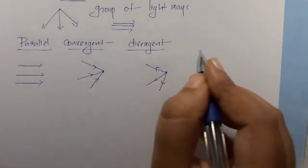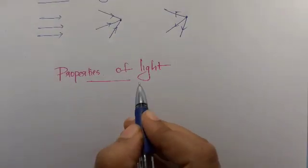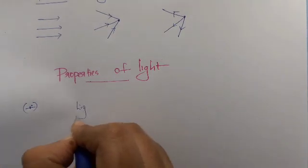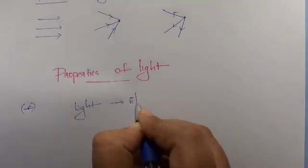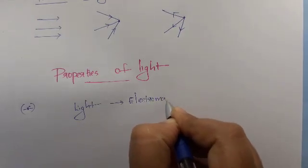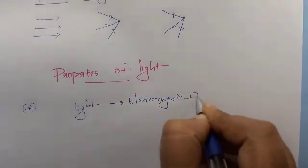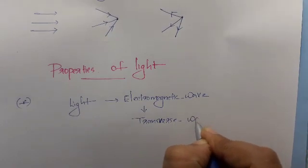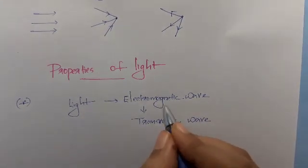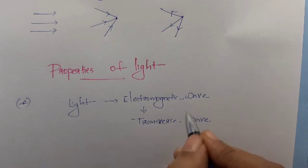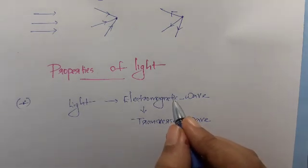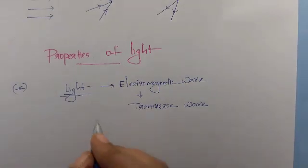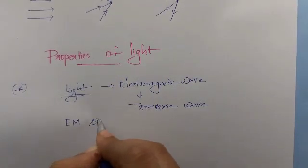Now, the properties of light. The first property: light is an electromagnetic wave. An electromagnetic wave is a transverse wave — not a longitudinal wave, but a transverse wave. So light is an electromagnetic wave, and it has an electromagnetic spectrum, also called the EM spectrum.